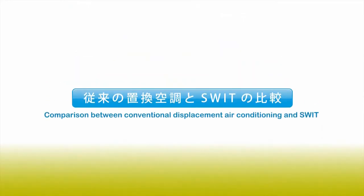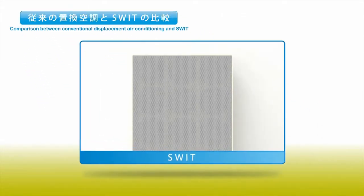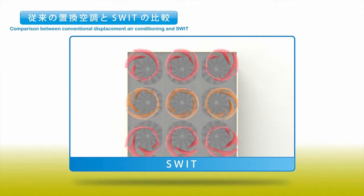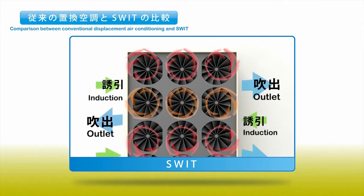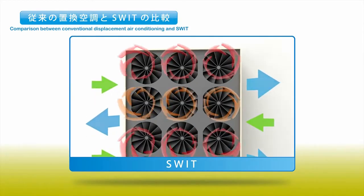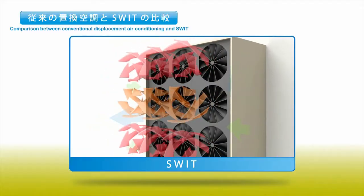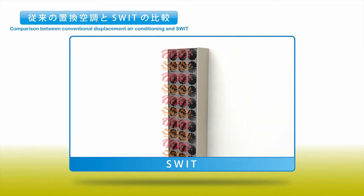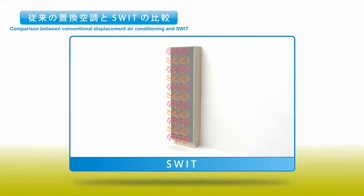Comparison between conventional displacement air conditioning and SWIT. SWIT is a new displacement air conditioning system that uses a swirling flow. Its most striking feature is how it increases the amount of air induction by various combinations of swirling flows. As a result, we managed to improve the level of comfort and cut down the size of the air supply unit to save space.